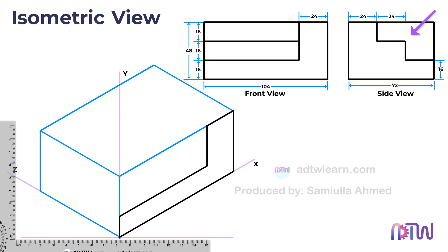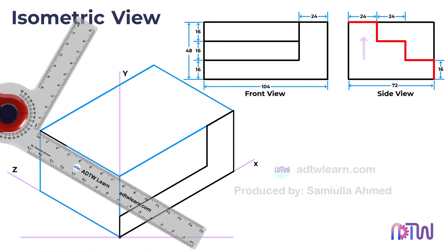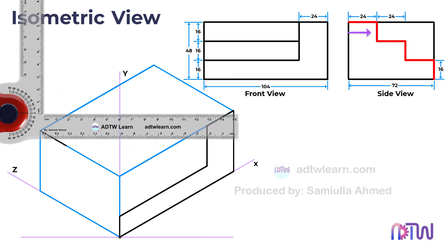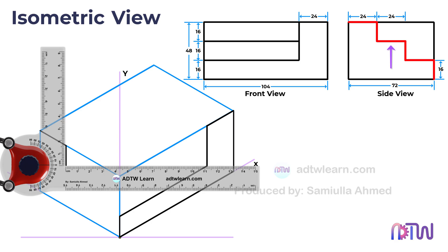We can observe that there is a stair-like structure in the side view. To construct this, draw a line of 24 mm parallel to the Z axis. Next, draw a vertical line of 16 mm, followed by another line of 24 mm parallel to the Z axis.